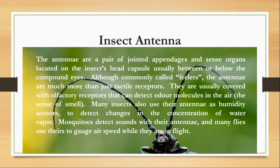Many insects also use their antennae as humidity sensors to detect changes in the concentration of water vapor. Mosquitoes detect sound with their antennae, and many flies use theirs to gauge air speed or wind speed while they are in flight.